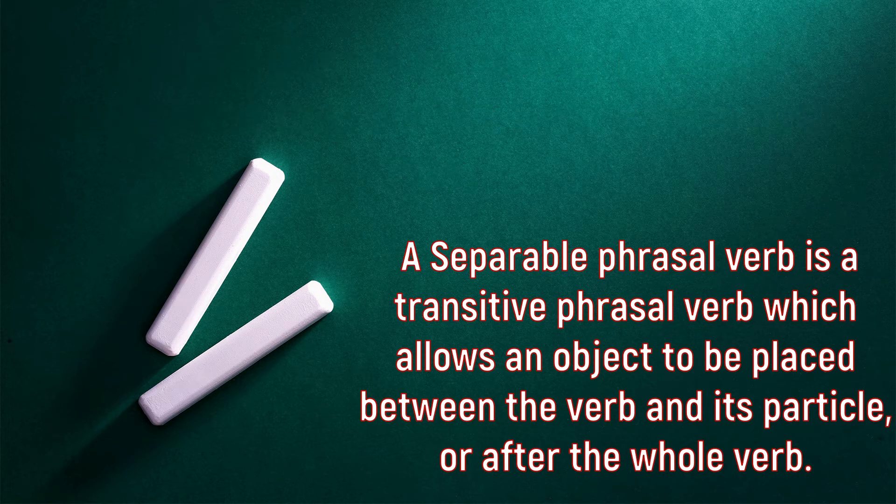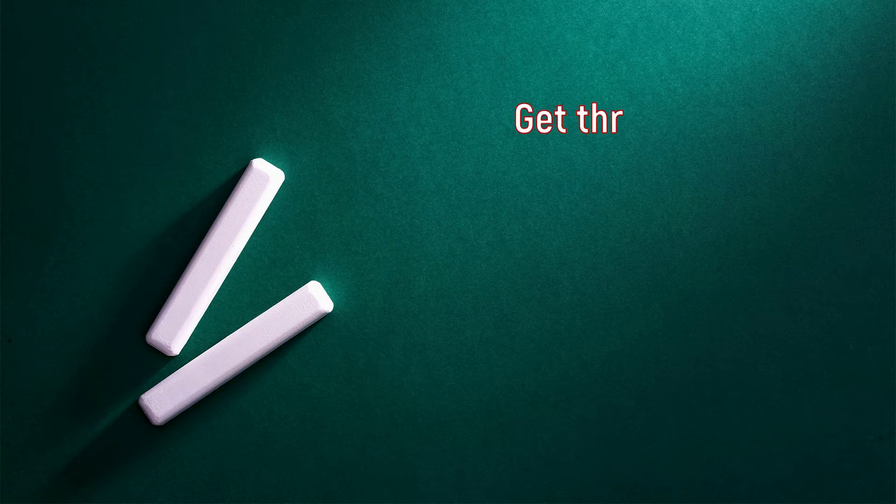Before we move on, remember that some phrasal verbs are separable and some are not. A separable phrasal verb is a transitive phrasal verb that allows an object to be placed between the verb and its particle, or after the whole verb. 'Look up' can be separable when you're searching for information, or inseparable when talking about improving. There is no fixed rule that will tell you whether a phrasal verb is separable or inseparable — you need to learn this by heart.